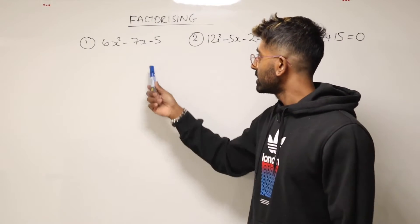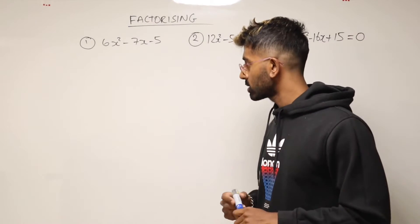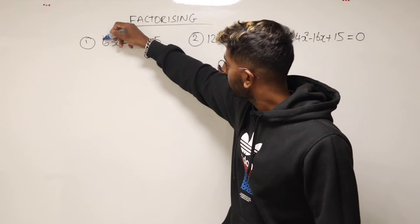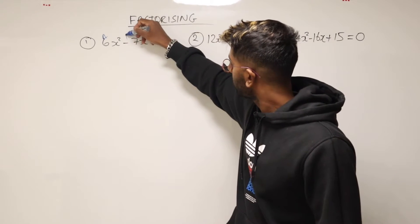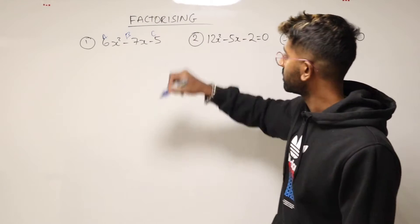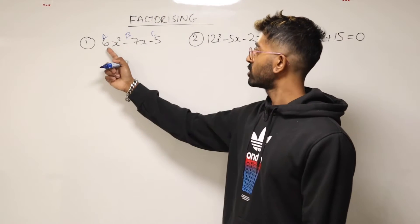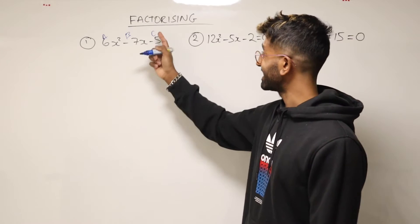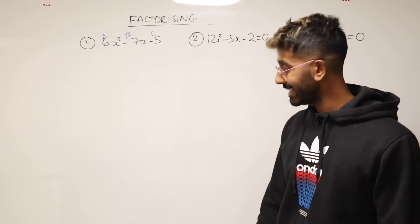Now to factorise these, here's one method you could use. The very first thing you need to do is start by labelling these a, b, and c. So a is the coefficient of the x squared, b is the coefficient of x, and c is the constant term on the end.